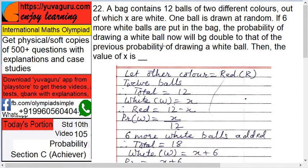That's it, and immediately double it. So let's say the other color is red. There are 12 balls total: white equals x, so red equals 12 minus x. The probability of drawing a white is x upon 12. Now six more white balls are added.